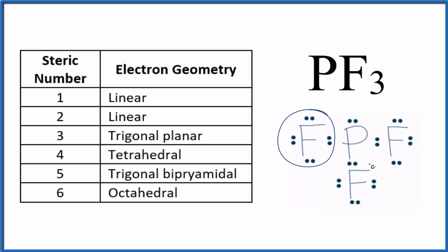So we have one, two, three fluorine atoms. Then we have this lone pair. So we have one, two, three, four things. That's our steric number. So we end up with a tetrahedral electron geometry for PF3.